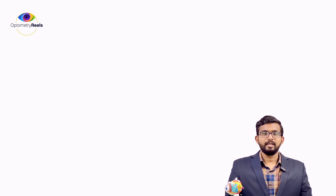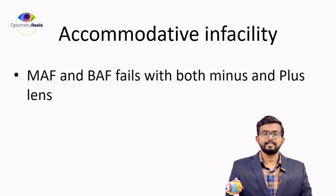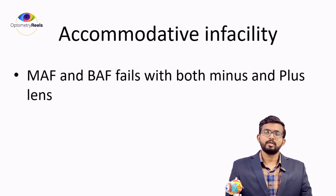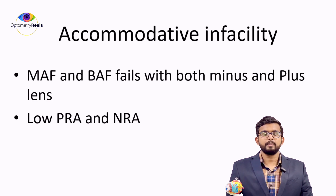The last one is accommodative infacility. Monocular and binocular accommodative facility will show both plus and minus lens difficulty. There will also be low NRA and low PRA.